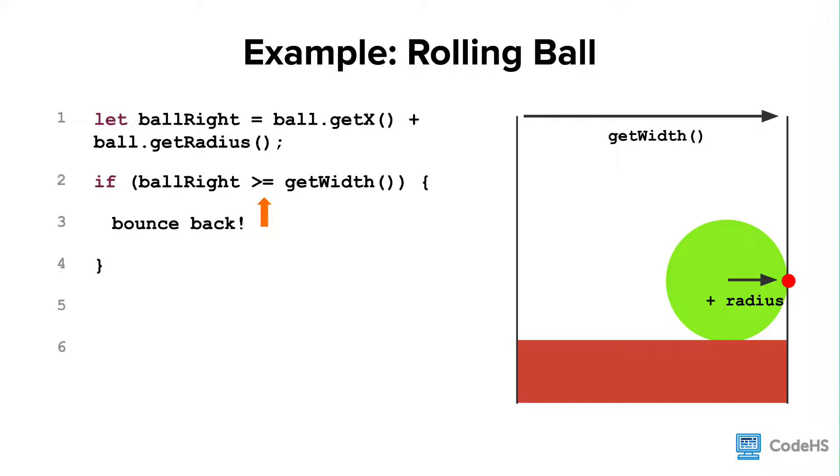To account for this, we will check to see if the right side of the ball is greater than or equal to get width. This will guarantee at some point this condition will be true.